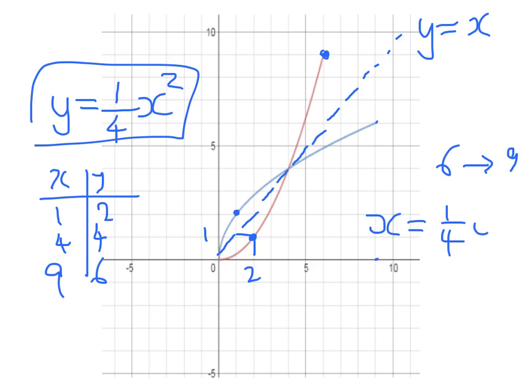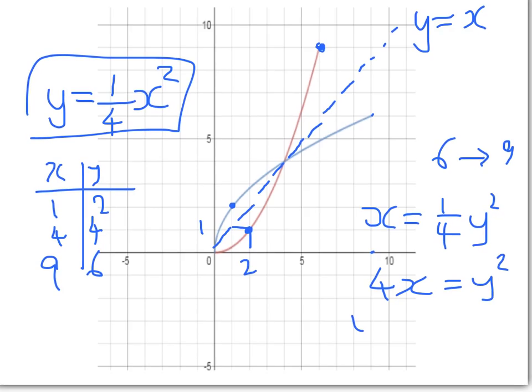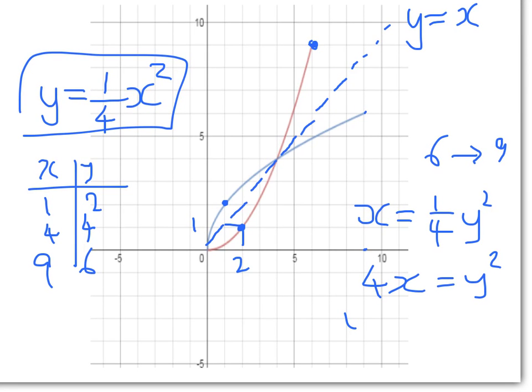x equals 1 quarter y squared. So 4x is equal to y squared. So that gives us y is equal to the square root of 4x. In other words, y is equal to 2 times the root of x.